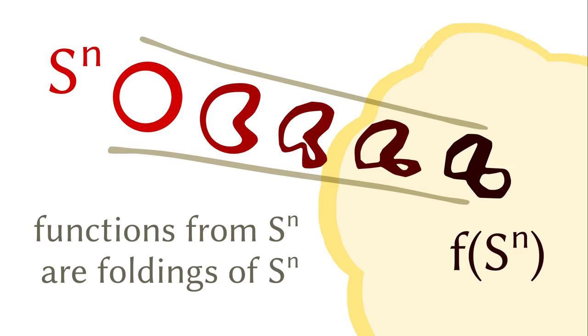Now we know what spheres are. The next important observation is that a mapping from a sphere, or any shape really, is a folding of that shape into the co-domain. For example, a function from S1 to a space is a loop in that space, and a function from S2 is a twisted ball. We will go back to this picture later.